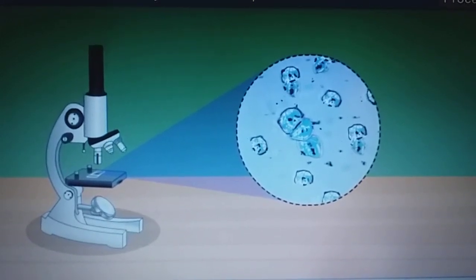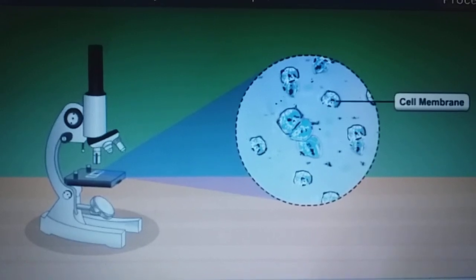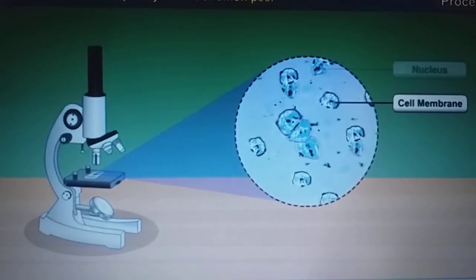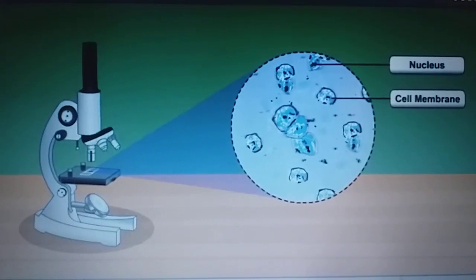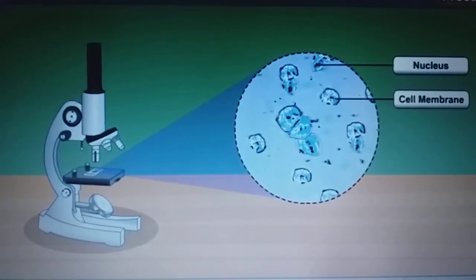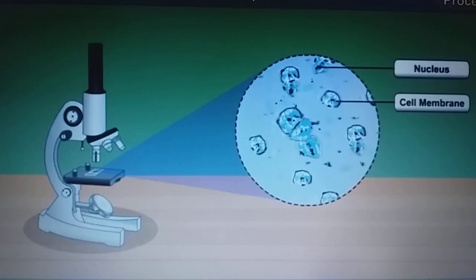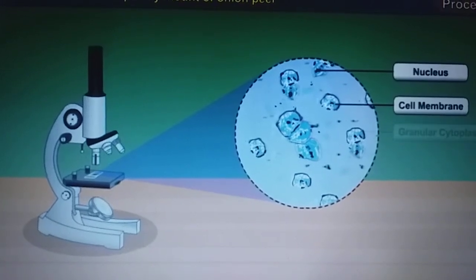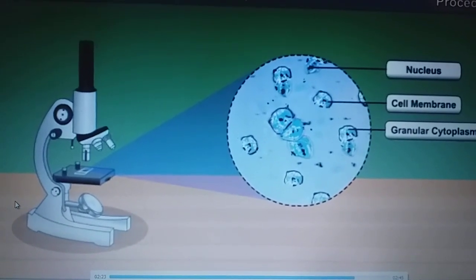Now observation. A large number of flat cells with irregular boundaries are seen. Each cell has a thin cell membrane. A distinct deeply stained nucleus is seen in each cell. Space between the plasma membrane and the nucleus is filled with granular material called cytoplasm. There are no intercellular spaces between the cells. No cell wall is visible.